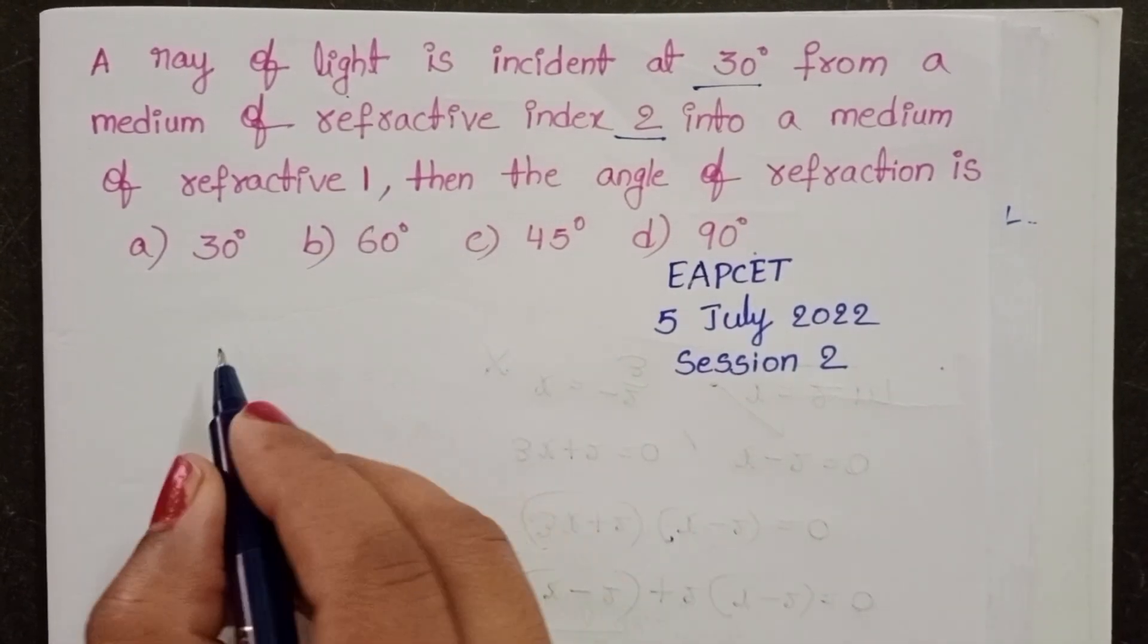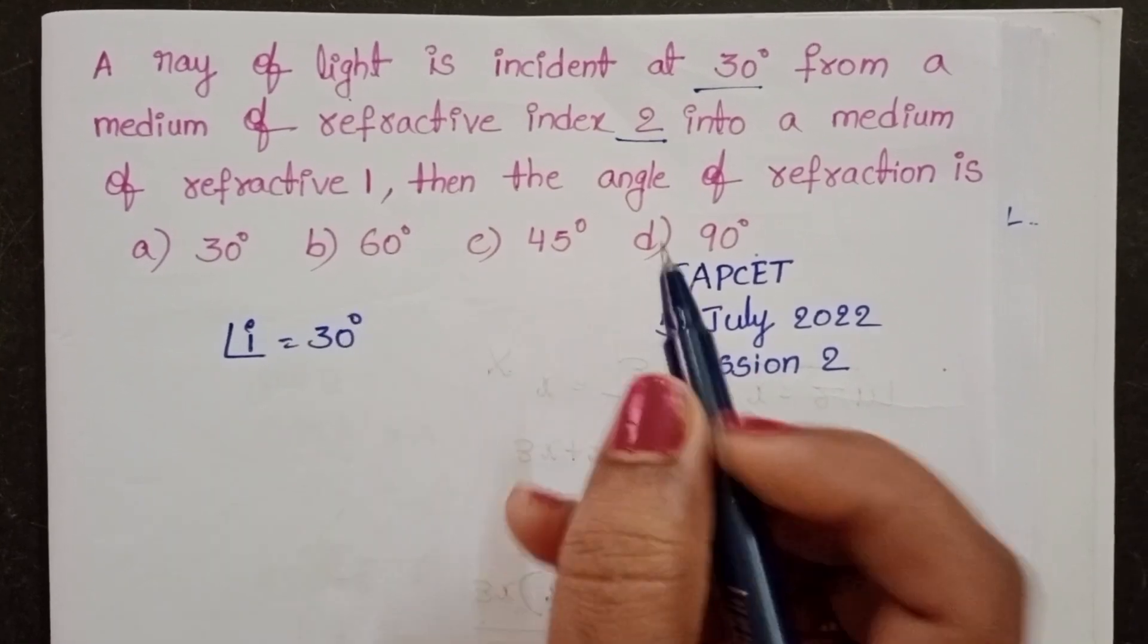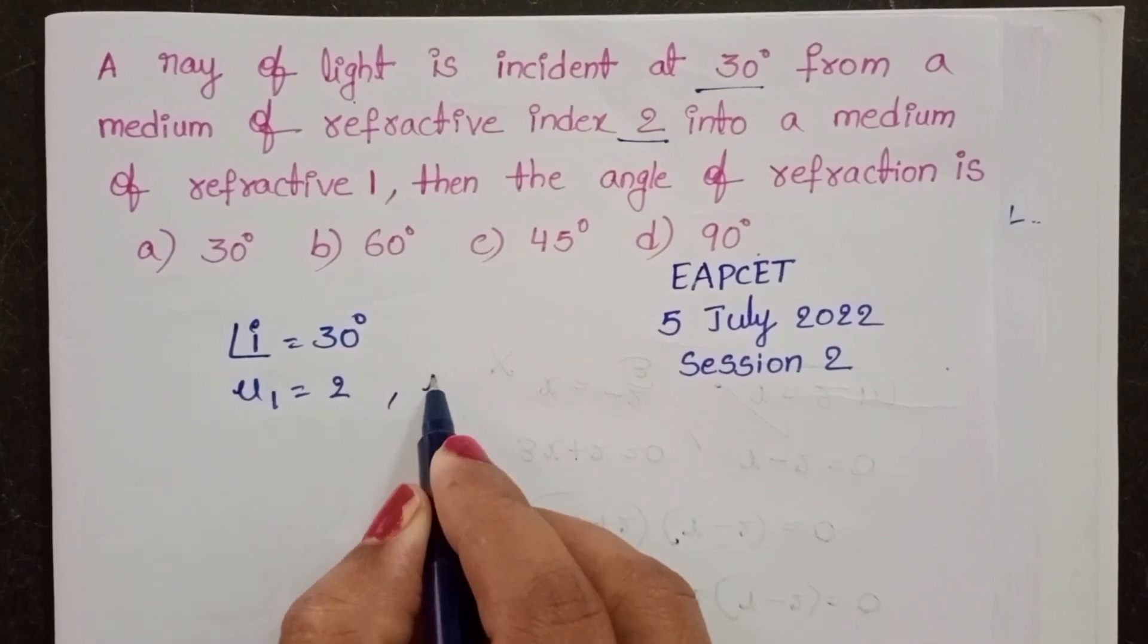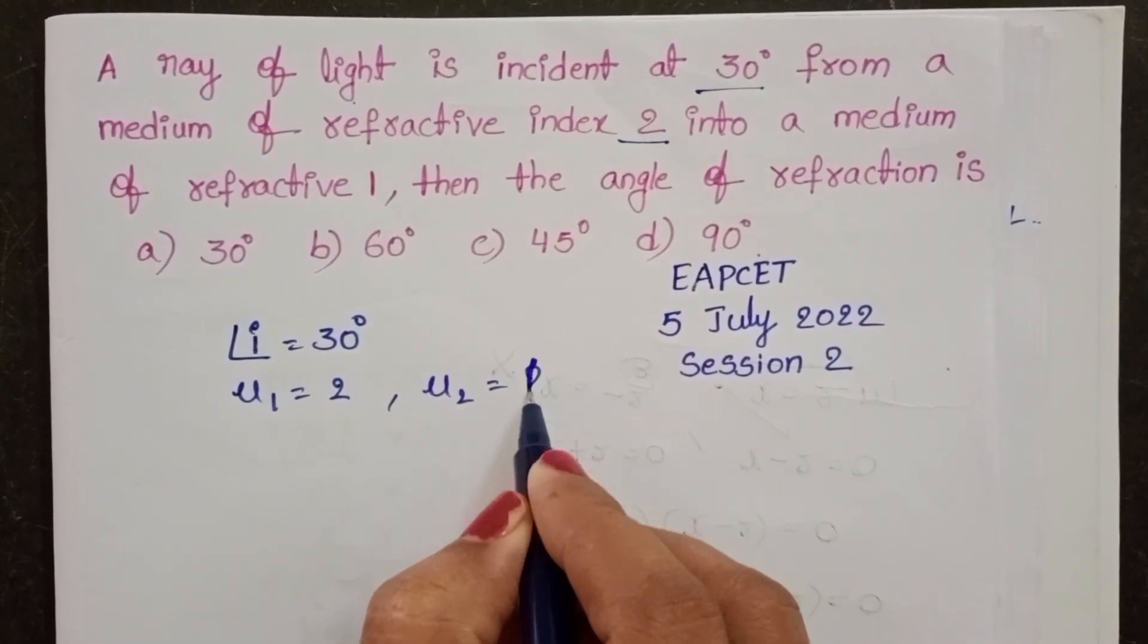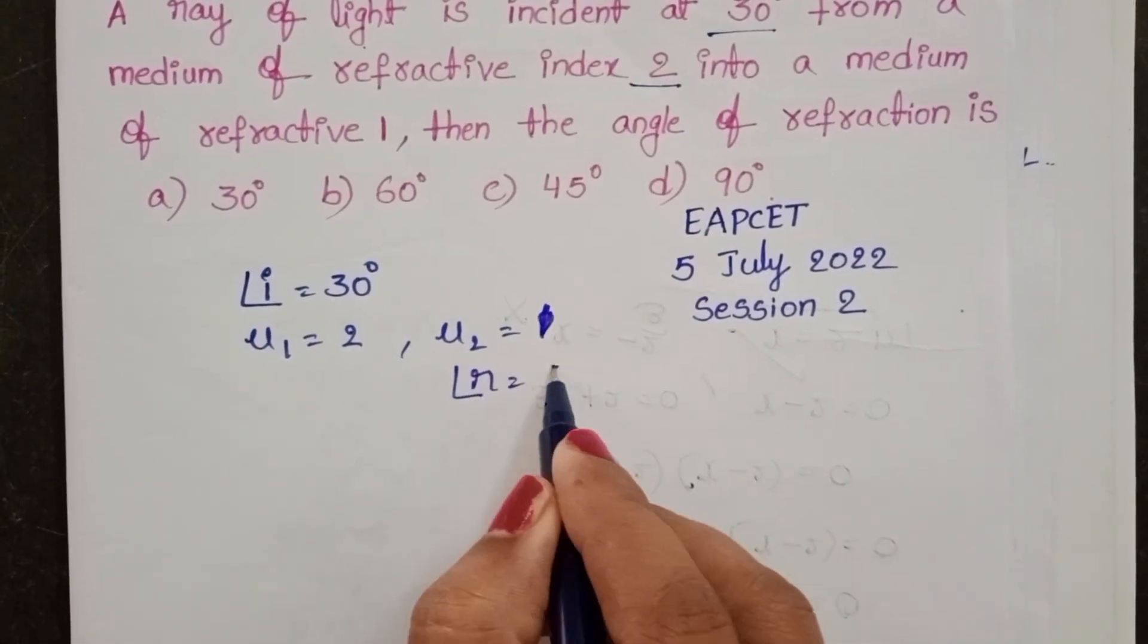In the given question we know the angle of incidence is 30 degrees. The refractive index of the first medium is 2 and the refractive index of the second medium is 1. We have to find out the angle of refraction.